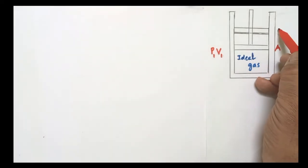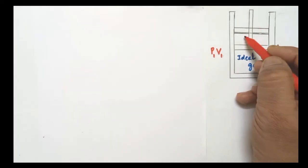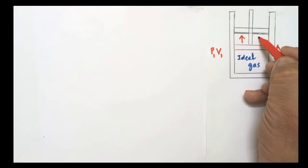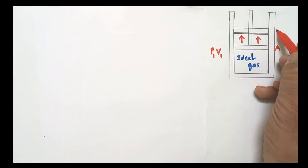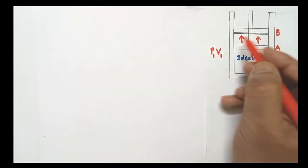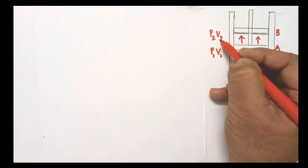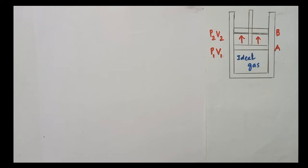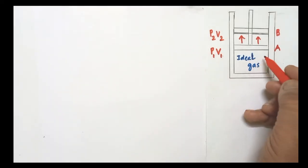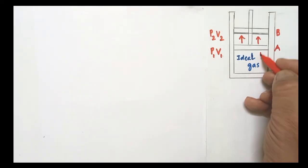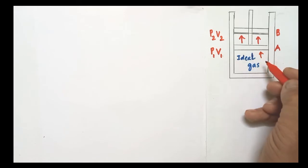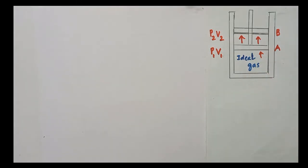When the gas expands, the piston moves in the upward direction and reaches a new position B. At position B, the new pressure is P2 and the new volume is V2 — pressure decreases and volume increases. Since the gas pushes the piston, this is referred to as work done by the gas.